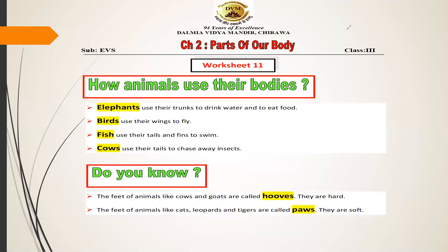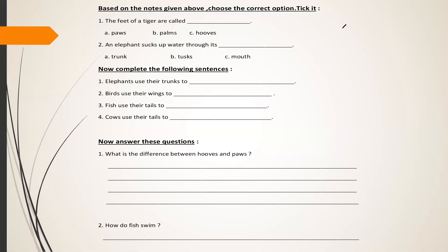So students, what have we learnt in today's class? We have learnt how different animals use their different body parts in different ways, and how those body parts help them. We also learnt what hooves and paws are. Based on today's video lecture, here is a worksheet for you all to solve — it's a very easy one. With this, we come to an end of today's EVS class. I hope you all enjoyed it.